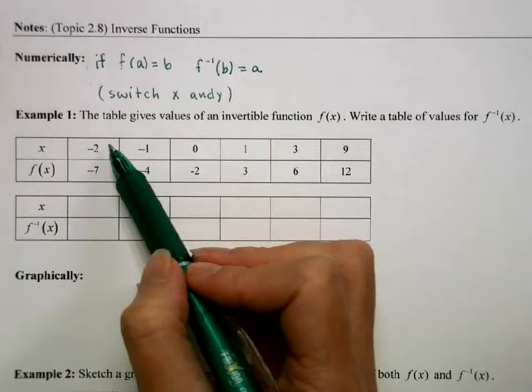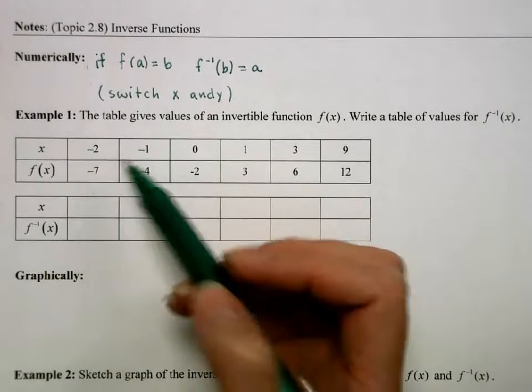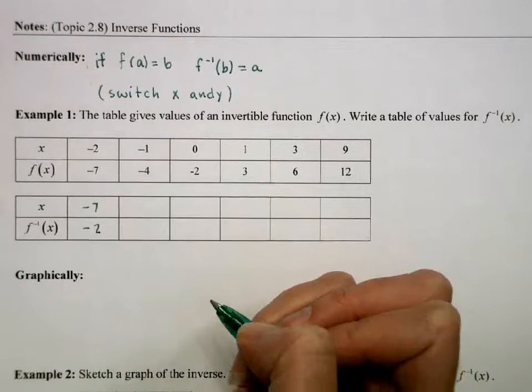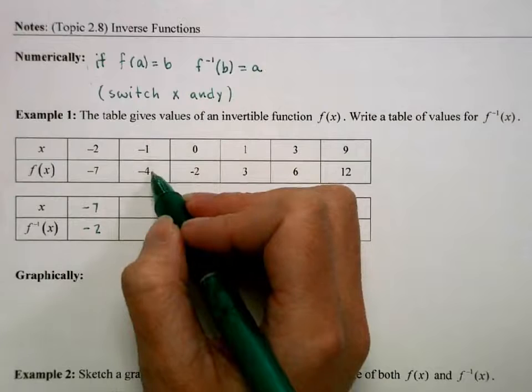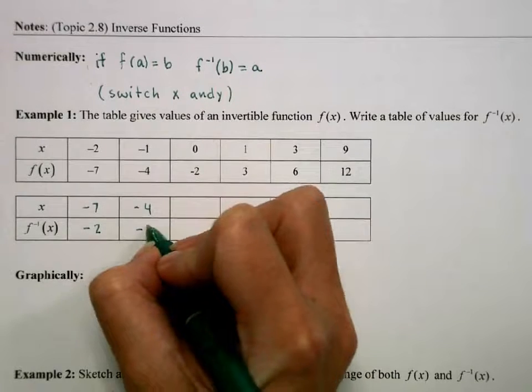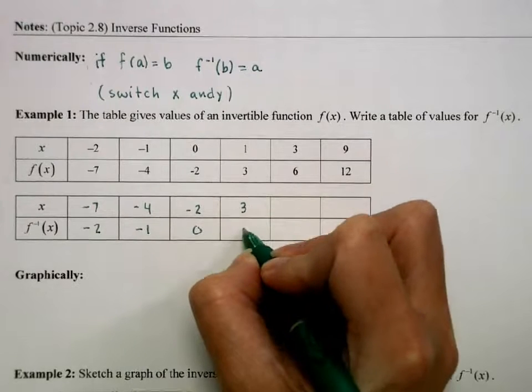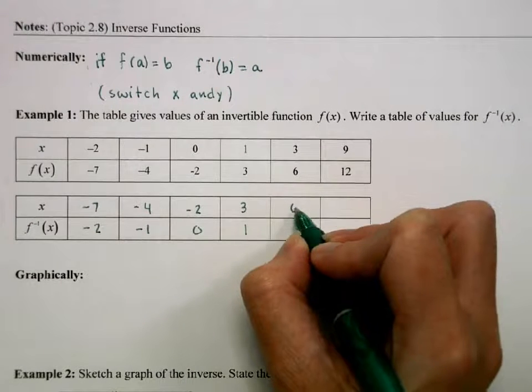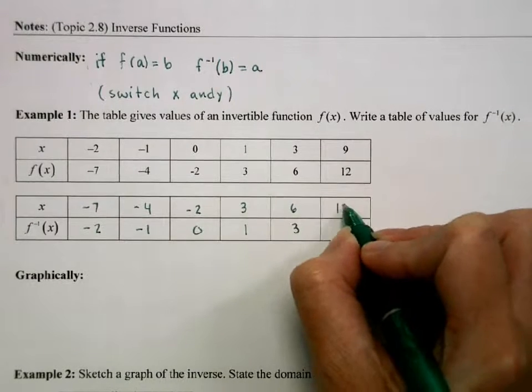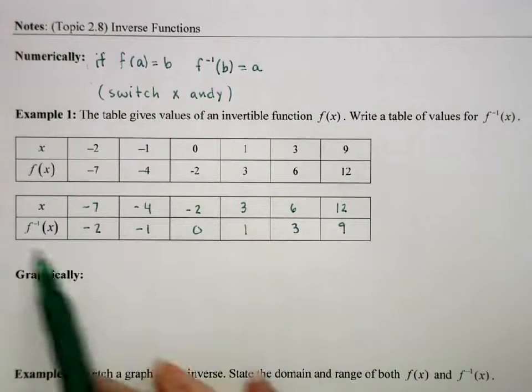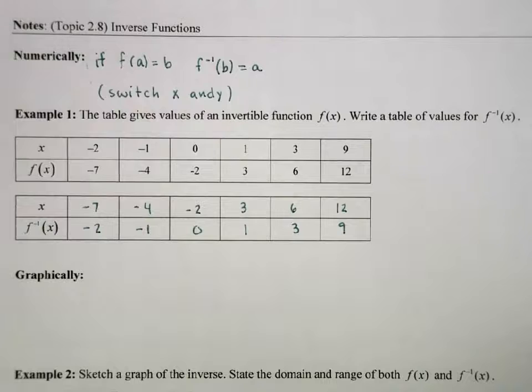On this chart, if the point (-2, -7) is on the original equation, then (-7, -2) is on the inverse. If (-1, -4) is on the function, then (-4, -1) is on there, and so on. These values are on the function, these values are on the inverse.